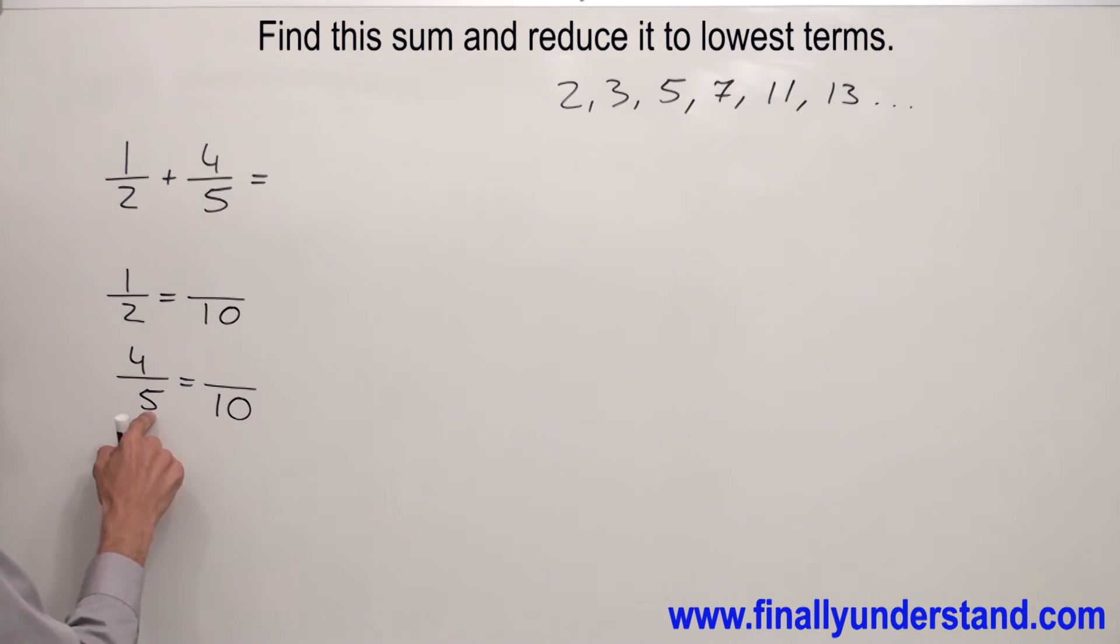The question is by what number do I have to multiply 5 to get 10? I have to multiply by 2. Whatever I did in the denominator I have to do the same operation in the numerator. So I have to multiply by 2. 4 times 2 gives me 8. By what number do I have to multiply 2 to get 10? I have to multiply by 5. Whatever I did in the denominator I have to do also in the numerator.